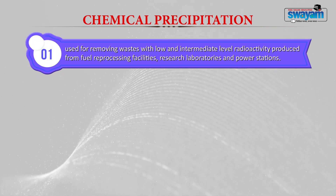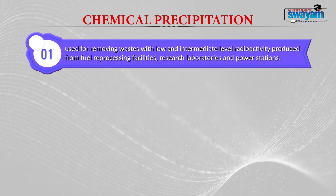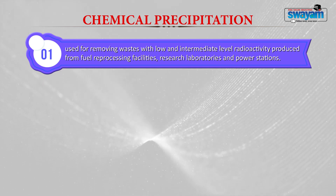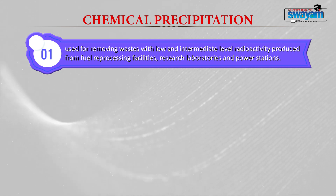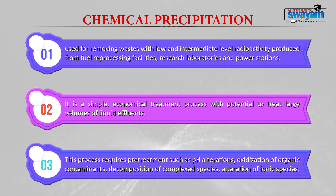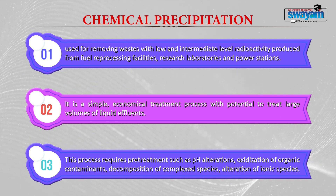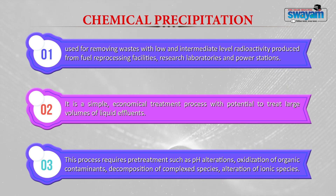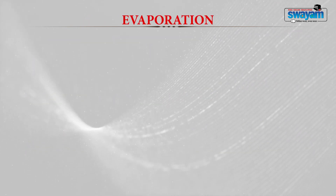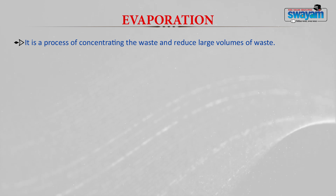Chemical precipitation is used for removing waste with low and intermediate level radioactivity produced from fuel reprocessing facilities, research laboratories, and power stations. It is a simple, economical treatment process with the potential to treat large volumes of liquid effluents. This process requires pre-treatment such as pH alteration, oxidation of organic contaminants, decomposition of complex species, and alteration of ionic species.